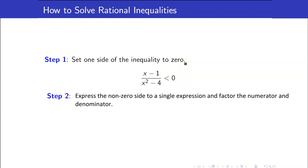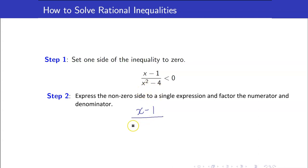The second step is to factor the numerator and denominator. The numerator can no longer be factored — that's still x minus 1. However, x squared minus 4 can be factored as a difference of two squares: x minus 2 times x plus 2.